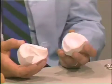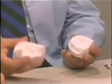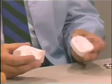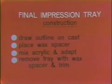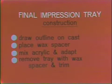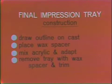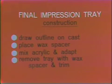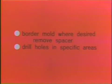With these, I will proceed to create the final impression tray. Before we do this, I'd like to go through the sequence of events which we will follow. We will start by drawing the outline of the final impression tray on the cast. Then a wax spacer will be placed with 28-gauge green wax. Then we will mix a cold cure acrylic and adapt this to our preliminary cast. And then we will retrieve the tray with the wax spacer and trim. Following this, we will go back to the mouth and border mold the final impression trays where we desire to do so.